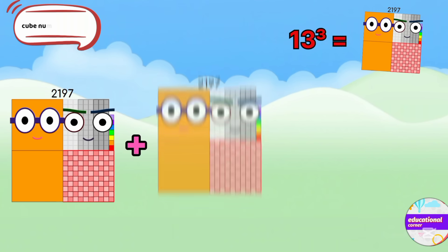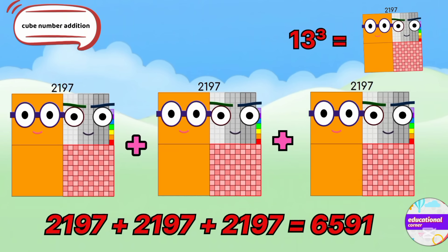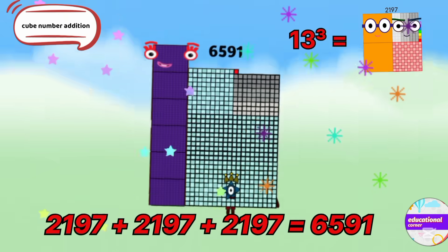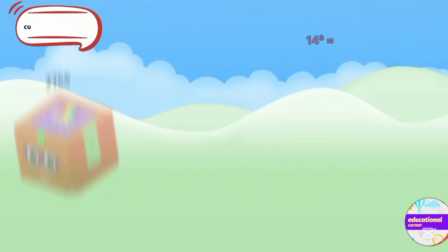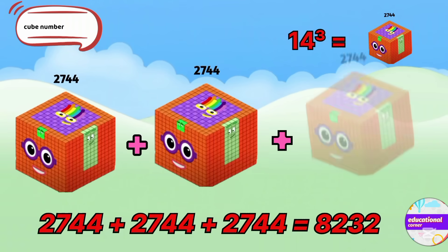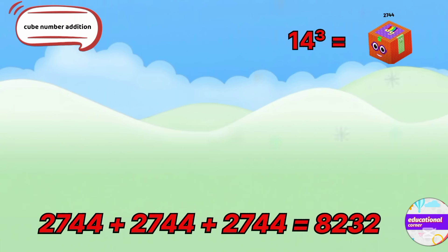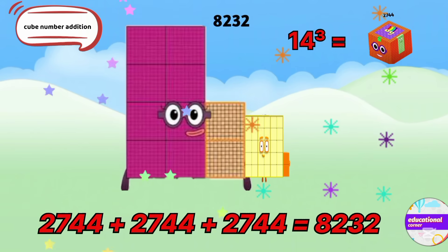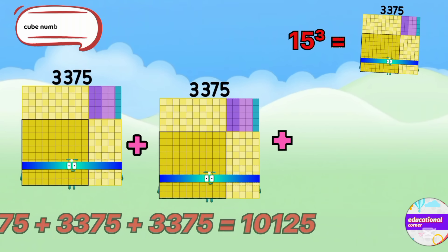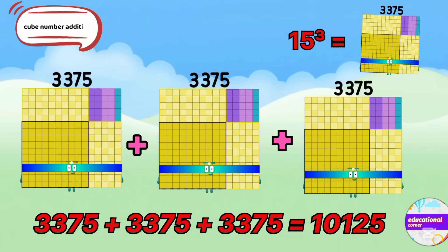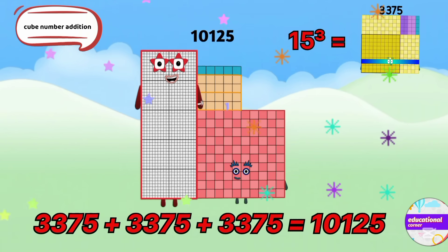The cube of 13 is 2197. If we add it three times, the answer is 6591. The cube of 14 is 2744. If we add 2744 three times, the answer is 8232. The cube of 15 is 3375. If we add it three times, the answer is 10125.